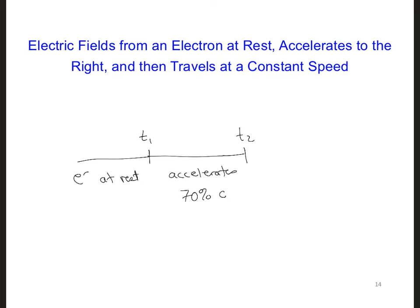And thereafter, the electron continues to move to the right at a constant speed equal to 70% of the speed of light. So here I'll say accelerates to 70% c and constant speed here, 70% c.